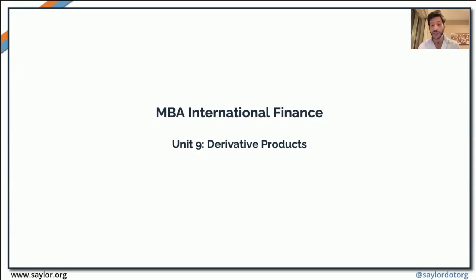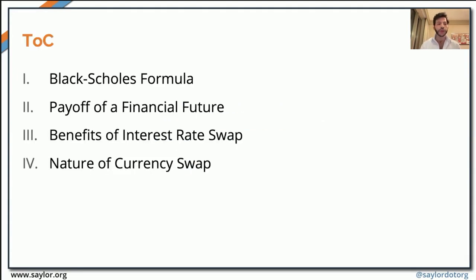Welcome back everyone. This week we're going to look at derivative products. We'll look at the Black-Scholes formula, then we'll look at the payoffs of the financial future, and at the same time we'll have a look at the benefits of interest rate swaps and then we'll examine the nature of currency swaps.